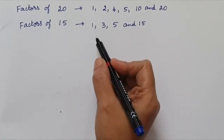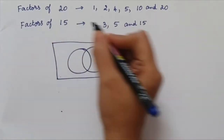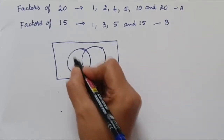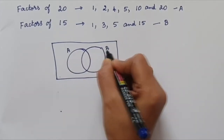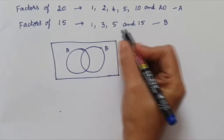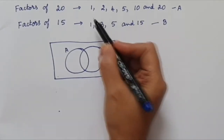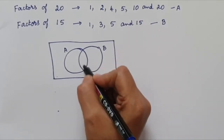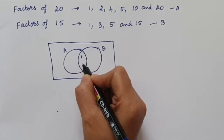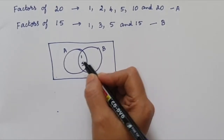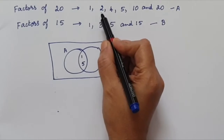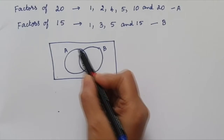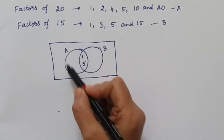Now let us represent these factors in a Venn diagram. Let us take the factors of 20 as set A and the factors of 15 as set B. When we take the common elements of these two sets, 1 is in both, and 5 is also in both. So this is the common region for both. We write 1 and 5 in the overlapping region. These numbers are there in circle A, which represents the factors of 20.